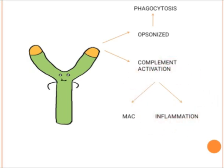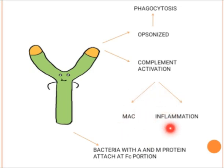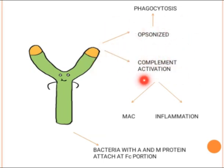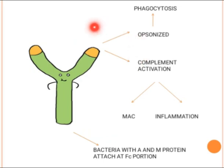Bacteria are clever — some contain A and M proteins that allow them to attach on the Fc portion of the antibody rather than the Fab region. When bacteria attach on the Fc portion, there is no opsonization, no phagocytosis, and no complement activation. In this way, bacteria with A and M proteins can resist the immune system.